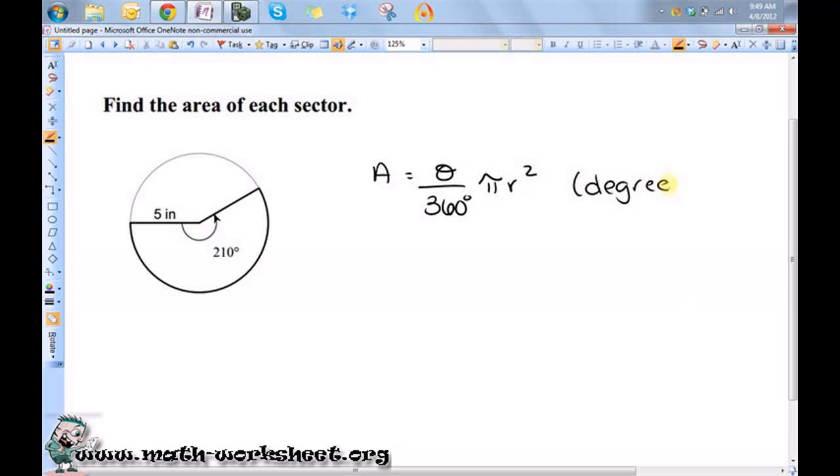Now there is a radian version, but we only need the degrees version in this case. So A equals 210 over 360 pi times 5 inches squared.